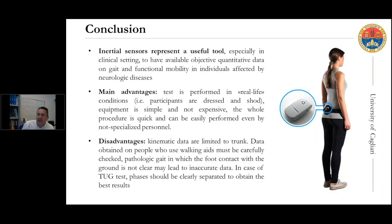In conclusion, we believe that the inertial sensor may represent a useful tool, especially in clinical settings, to provide objective quantitative data on gait and functional mobility in individuals affected by neurological disease — including multiple sclerosis, Parkinson's disease, and stroke. The main advantage is that tests can be performed in real-life, ecological conditions: participants are dressed normally, you don't need to undress them or place markers as required with motion capture systems. The equipment is simple, not expensive, and the procedure is quick — it can easily be performed even by non-specialist personnel.